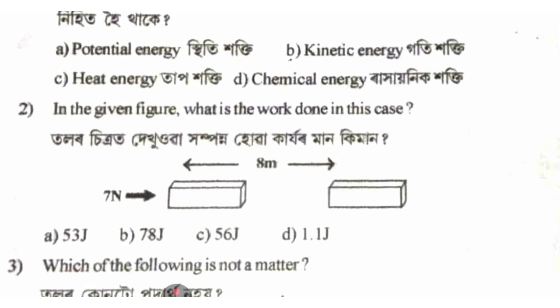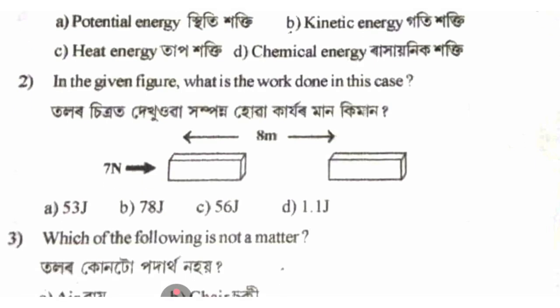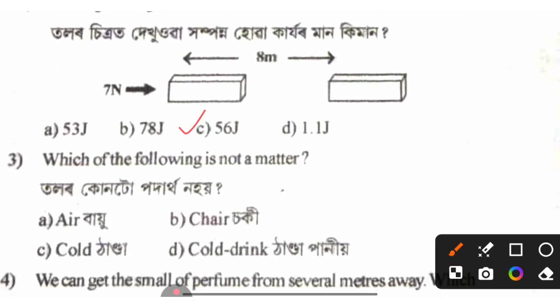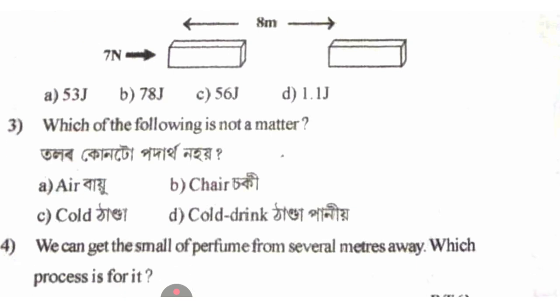In the given figure, what is the work done in this case? The answer option is C — zero work done.